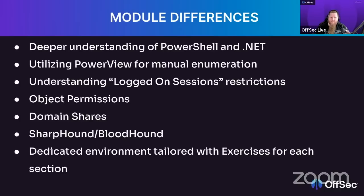For this edition we're taking a deeper dive into PowerShell and .NET classes in the directory services namespace. We're still building our own script as a transition into PowerView, because you want to understand what your scripts are doing. If you don't understand the PowerShell code, you don't really know what PowerView or BloodHound is doing either. We're using way more PowerView now for manual enumeration.